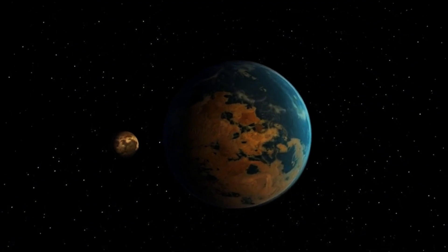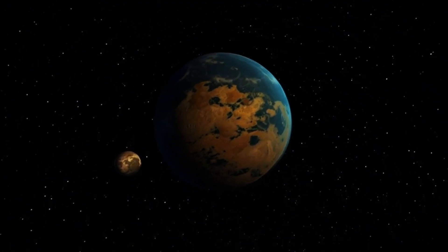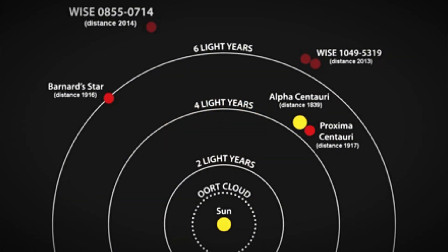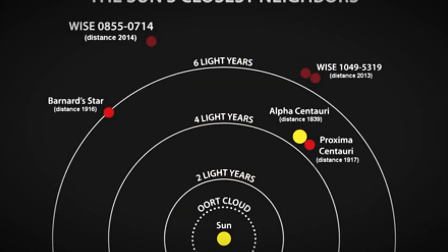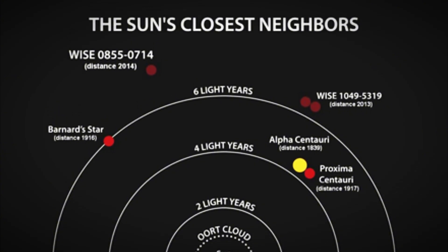Proxima b, which orbits Proxima Centauri, was named for its proximity to the second closest star system to Earth after our Sun. This extraordinary discovery allows us to view the Alpha Centauri system as it appeared four years ago, given its distance of about four light-years from us.